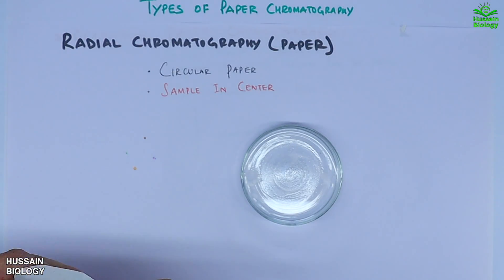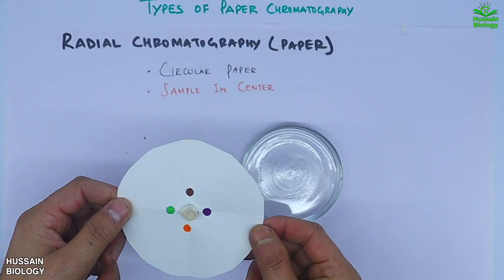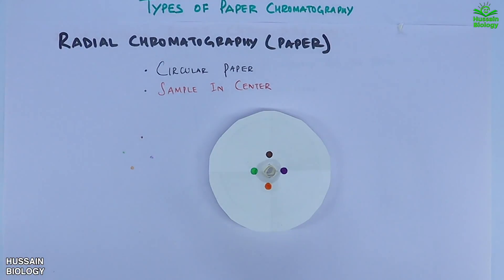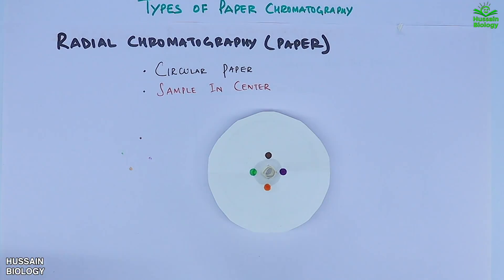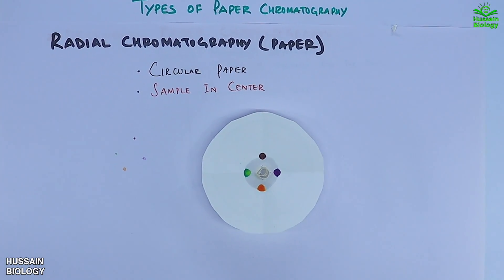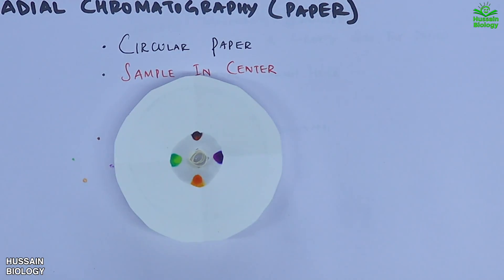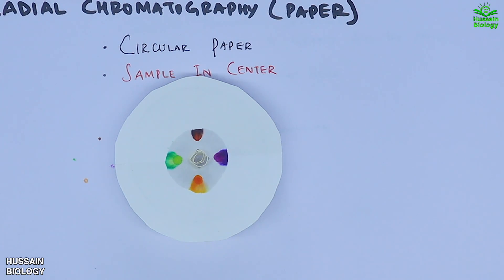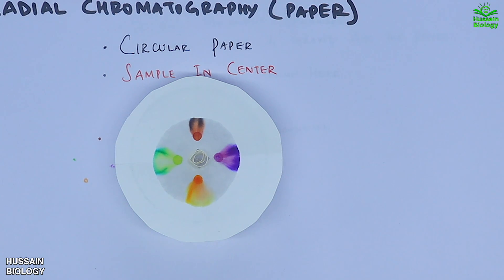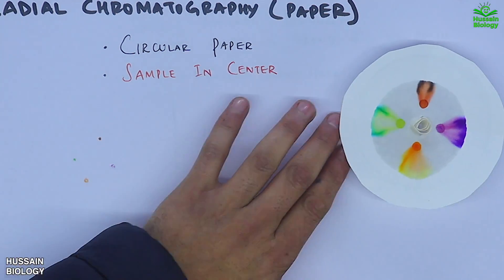We place the whole paper structure into the petri dish so that only the lower cylindrical part touches the solvent. Capillary action immediately takes place — the solvent rises up and is distributed across the circular disk-shaped filter paper, shown in the images. We get the final chromatograph of radial chromatography like this.